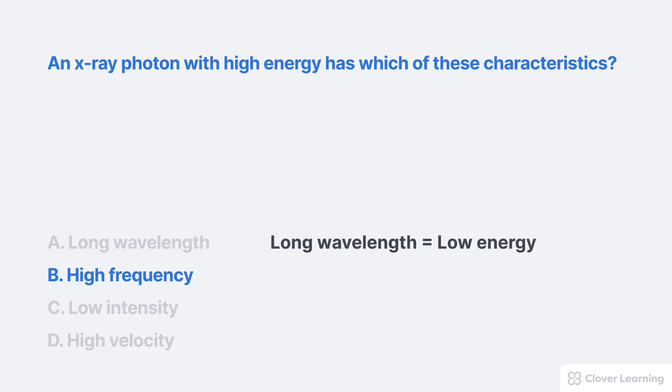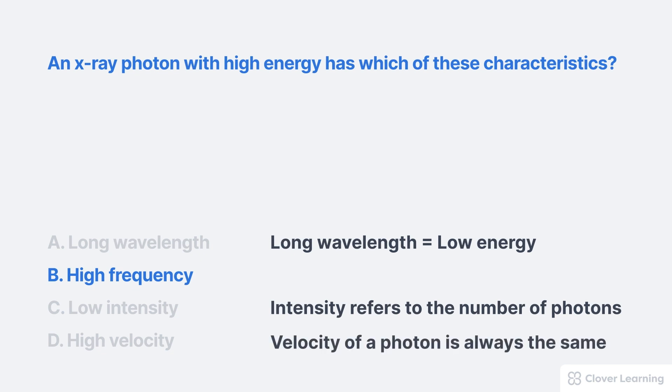A is not correct because a long wavelength results in low energy. C is not correct because intensity refers to the number of photons, not the energy. And finally, D is not correct because the velocity of a photon is always the same. It's always the speed of light.